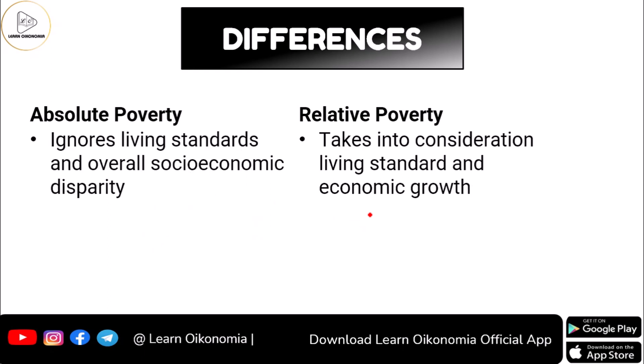In the case of absolute poverty, it ignores living standards and also ignores socioeconomic disparity, because we are just looking at the basic needs — whether a person has some income sufficient enough to satisfy their basic needs. But relative poverty will definitely take into consideration the standard of living, economic growth, and similar factors, and it goes for comparison of people based on these criteria.